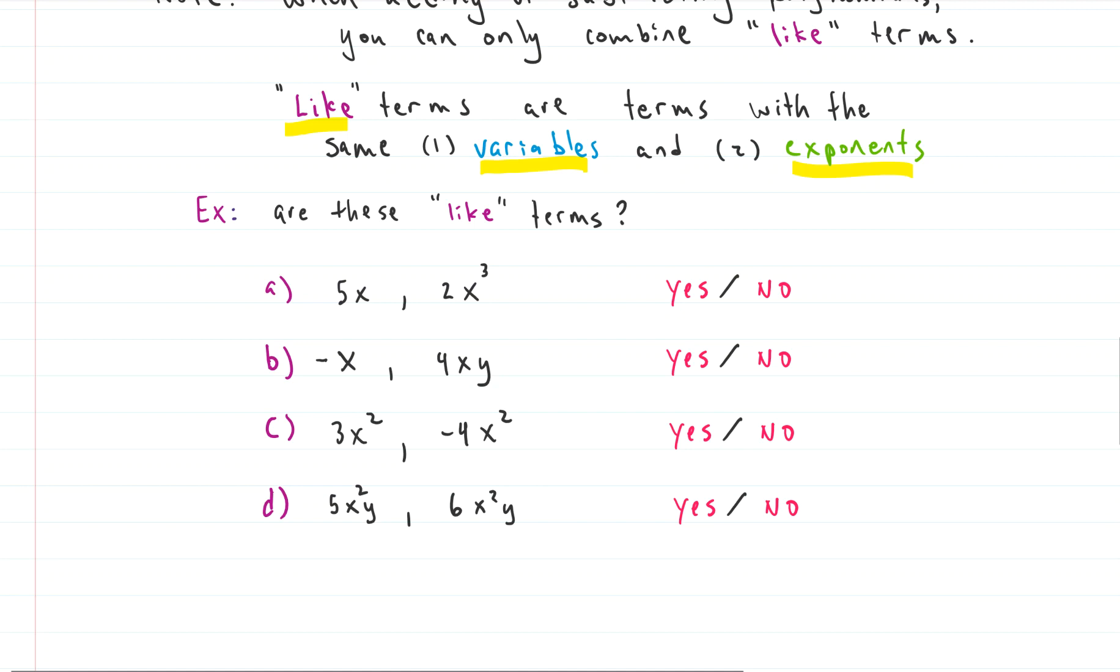So A, 5x and 2x cubed. Our two categories are variables. They both have an x here. So that works. Check that box. Do the variables have the same exponent? Nope. They don't. Because this one has a 1 for the exponent. This one has a 3. They're not the same. Not the same fruit. So we would say, nope. Those are not like terms. Not the same fruit. How about the next one? We have x and we have x in the other one. But this second term has a y and the first one doesn't. Not the same fruit. Can't add those two together even if we wanted to.